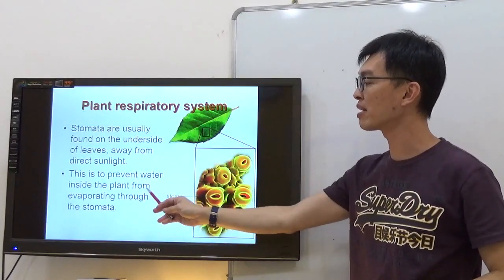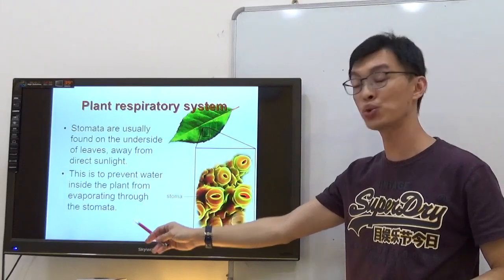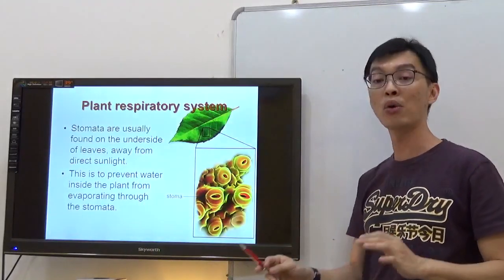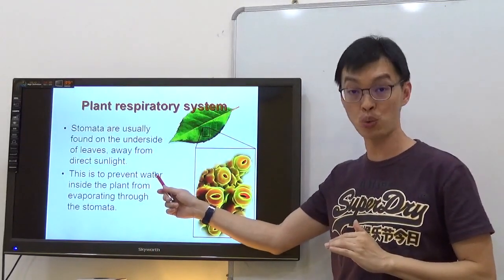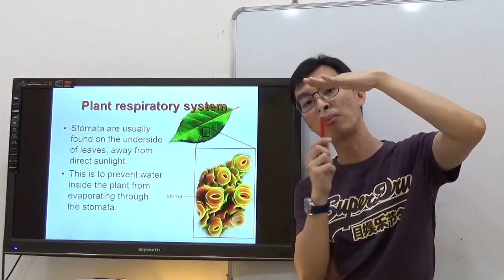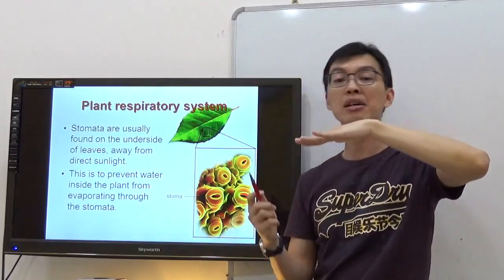This is to prevent water inside the plant from evaporating through the stomata. We want to prevent the leaves from losing too much water. That's why most of the stomata are found on the underside.